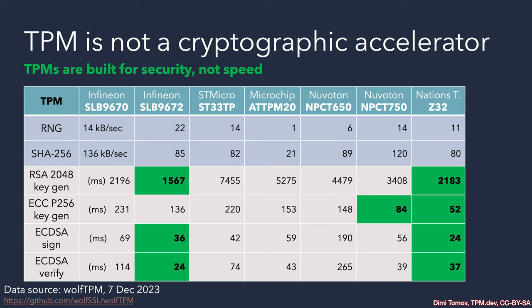While this trade-off is known, the question of performance often comes up. The best resource I have found is the benchmarking done with the Wolf TPM software stack, which was mentioned in earlier lectures — it is one of several well-known open source TPM software libraries. The public data published on the Wolf TPM GitHub repo was used to create a brief comparison table.